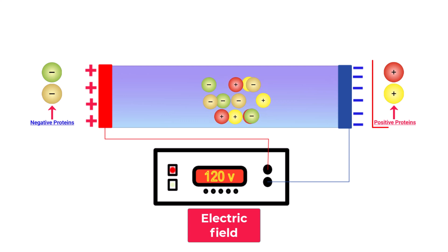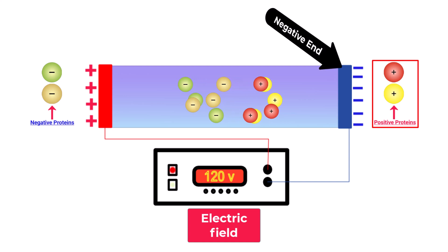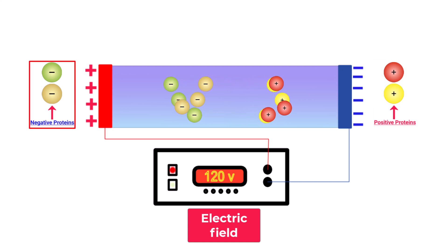Remember, positively charged proteins strike towards the negative end of the gel, while negatively charged proteins rush towards the positive terminal of the gel.